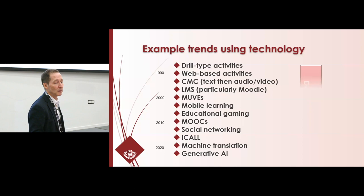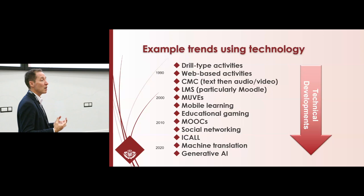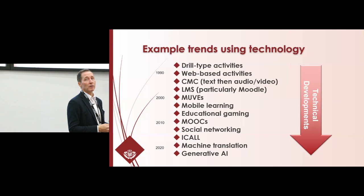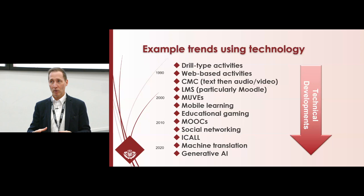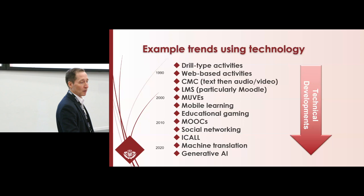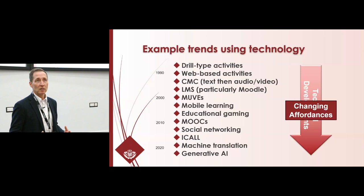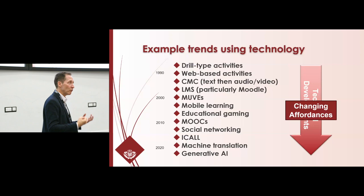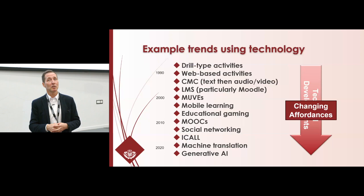What makes this possible is the technical developments — the technology has come a long way. If we look at AI, for example, it's far from a new field; it's been around for a long time but it is different now from what it was in the past. With this we have our changing affordances — we can do different things with these technologies. But we still need those other elements: we need our skills, we need to develop our experience, and we need to keep our imagination.